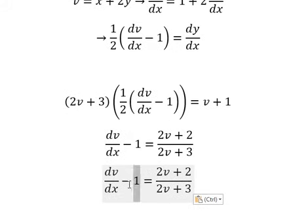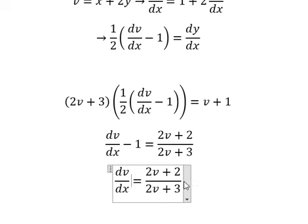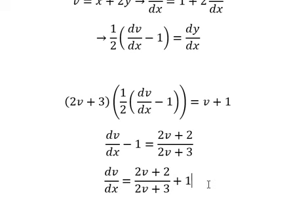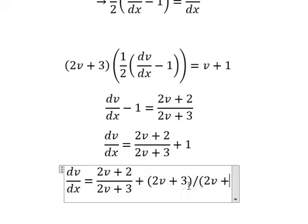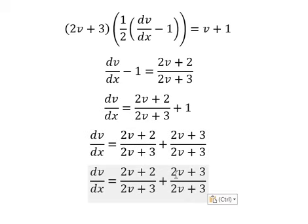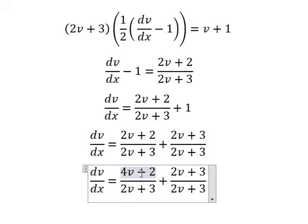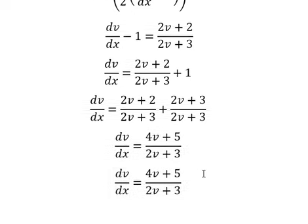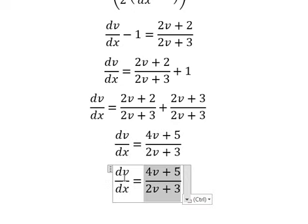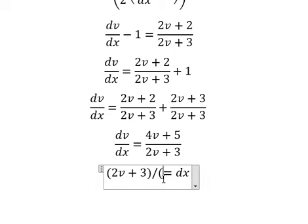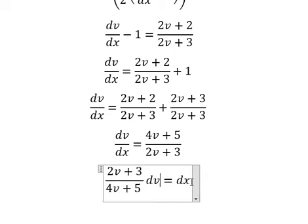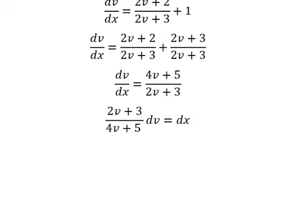Next, I move negative one to the right to get positive one. For number one, we apply a common denominator. We get 2v plus 2v which gives 4v, and numbers two and three give number five. I then move this term to the left and dx goes to the right.